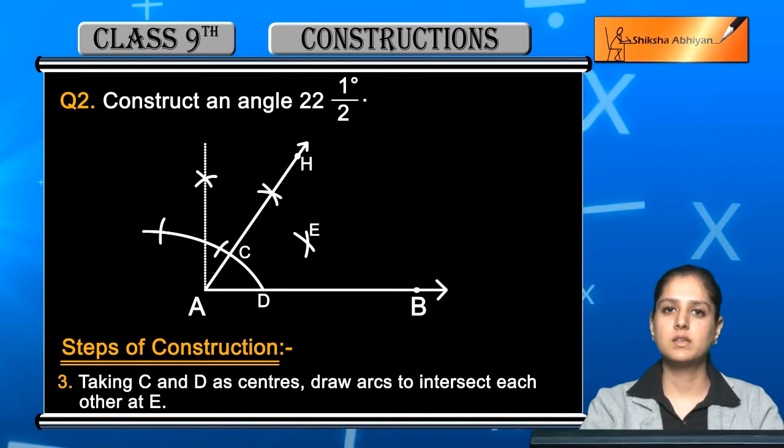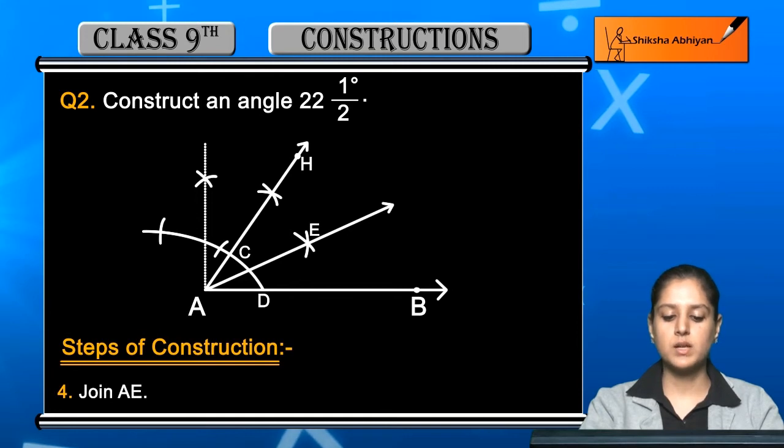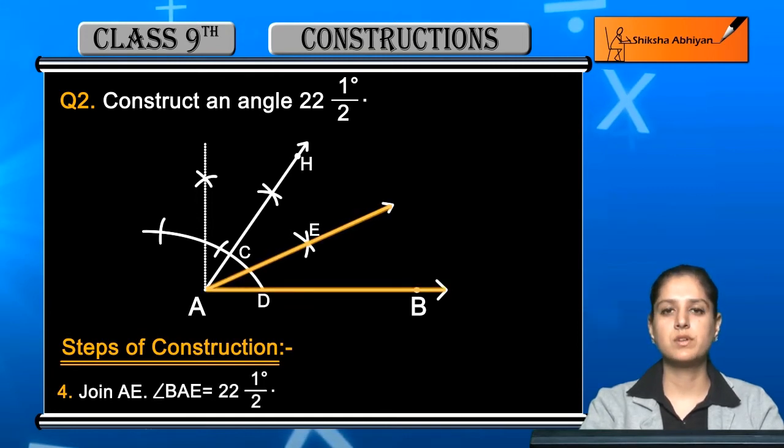The last step is to join A and E. The line AE creates angle BAE. This angle BAE is 22 and a half degrees.